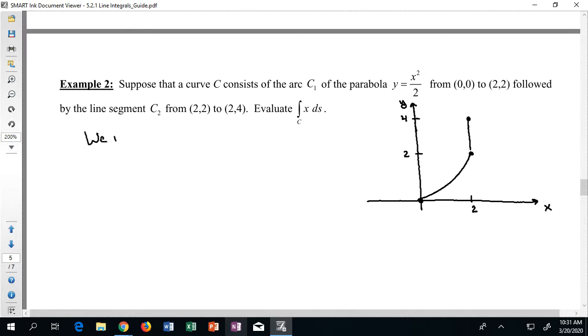So I'll start by saying this, we note that the integral for this is equal to the integral along C1 plus the integral along C2. I go along the parabola first and then across the line segment. Okay perfect.